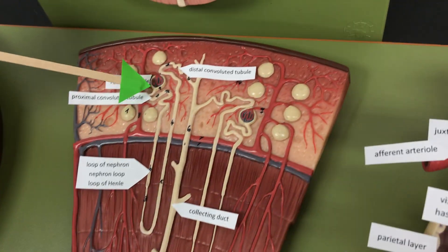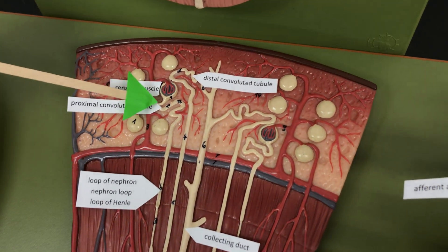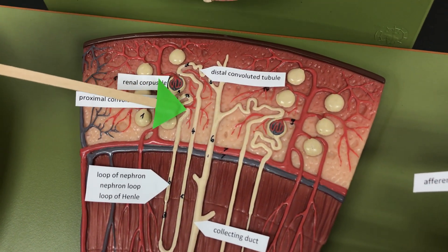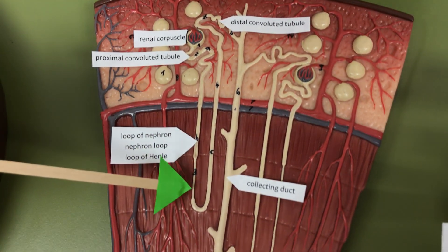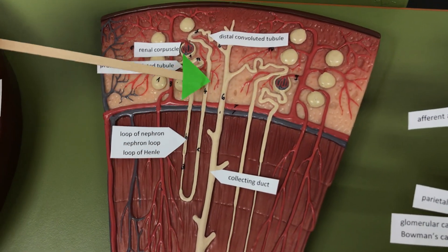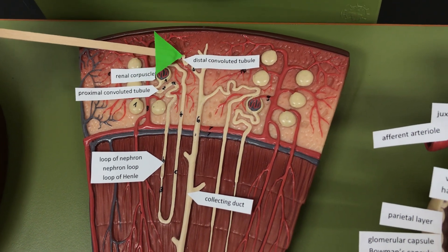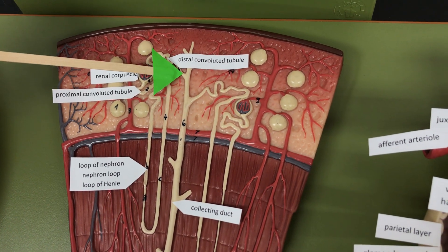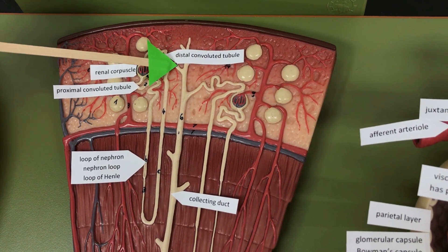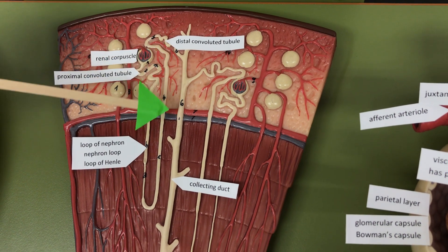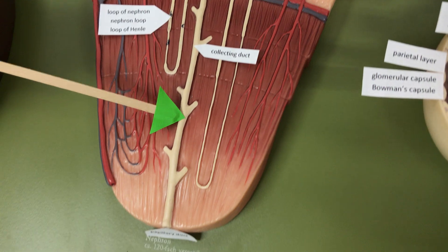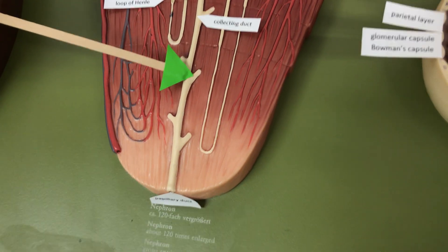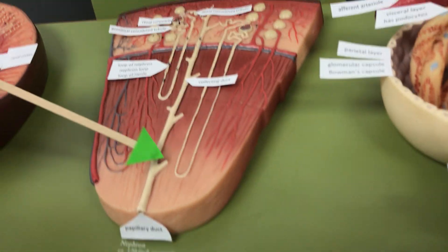The nephron consists of the renal corpuscle, the proximal convoluted tubule, the loop of Henle, and the distal convoluted tubule. Several distal convoluted tubules are going to drain into one collecting duct. We can see these DCTs by these white tubules.